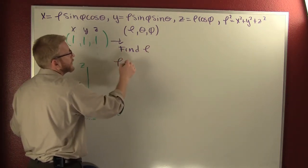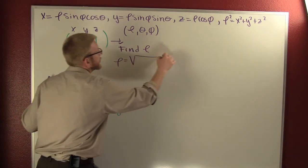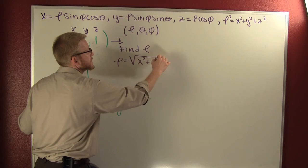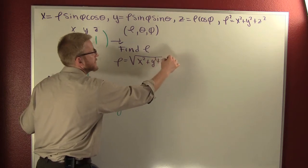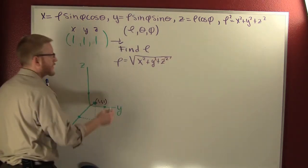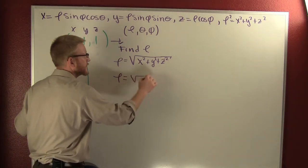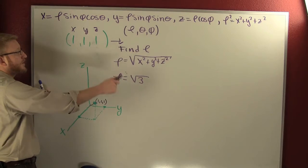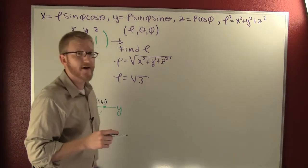So rho is the square root of x squared plus y squared plus z squared. Looks like rho's going to be root three after we plug it in and evaluate.